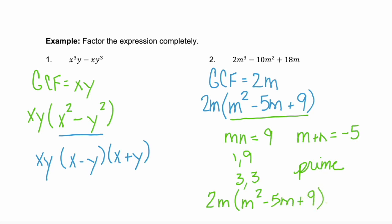Which means our final factored form is 2m times m squared minus 5m plus 9. We were able to factor out a GCF, but that's as far as we could go. That trinomial couldn't be factored anymore.